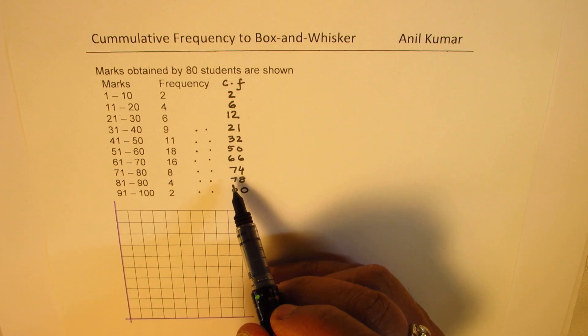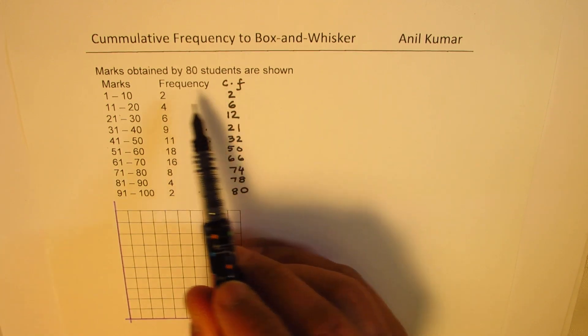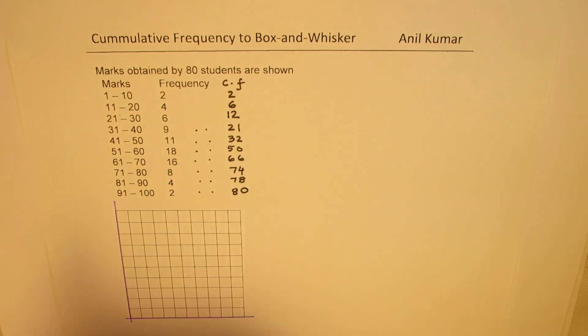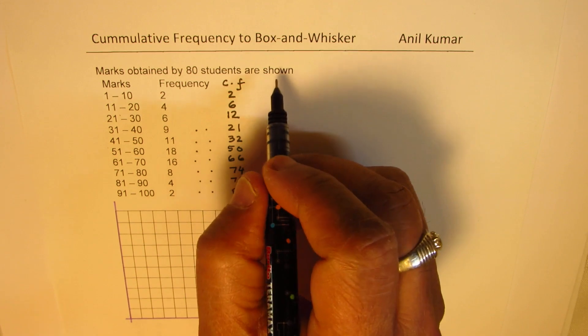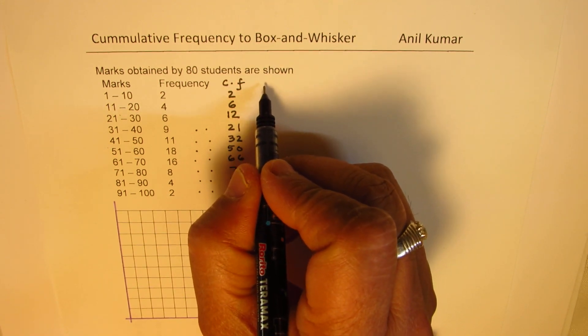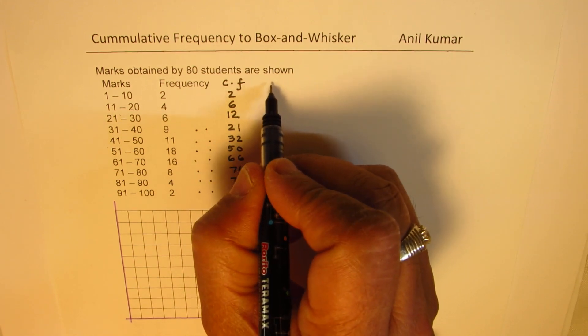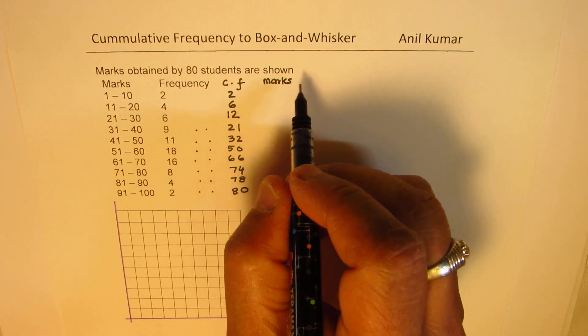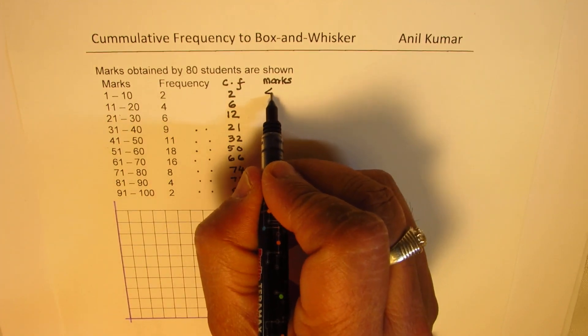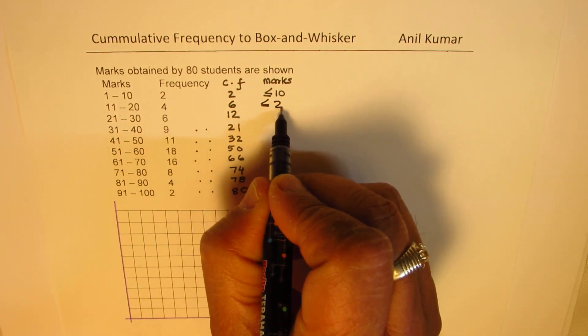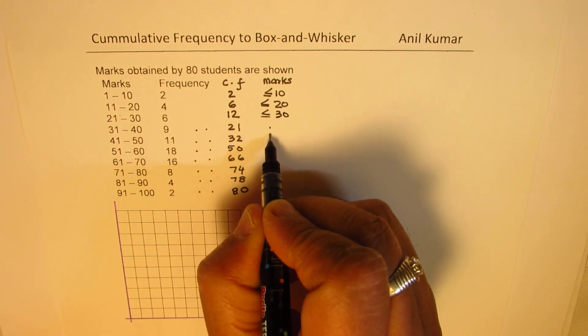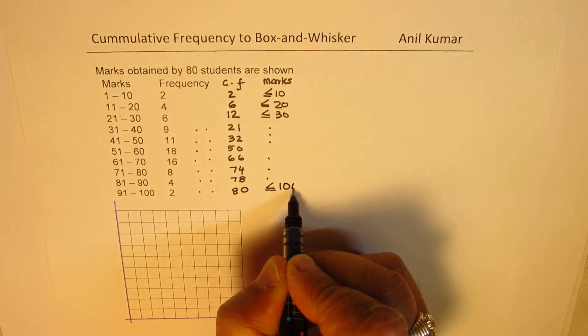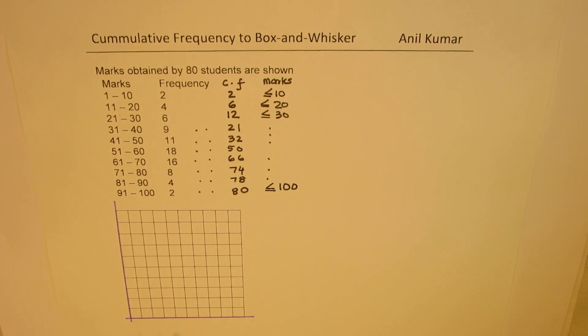These cumulative frequencies represent the number of students who scored marks up to the maximum of 10, 20, 30, and so on. The marks represented by cumulative frequency are up to 10 in this case, less than or equal to 10. This one is less than or equal to 20. That one is less than or equal to 30, and so on, up to here, which is less than or equal to 100. That gives you the coordinate points on the cumulative frequency graph.